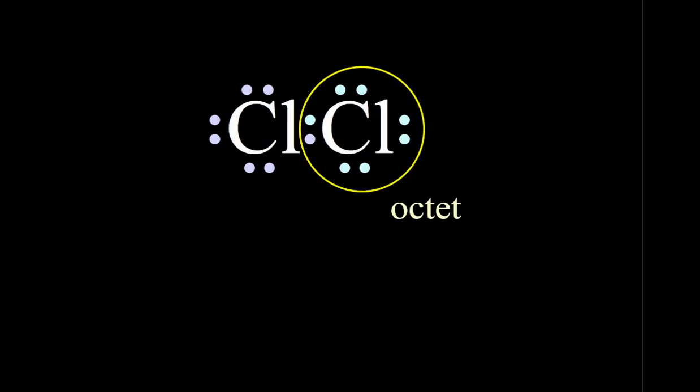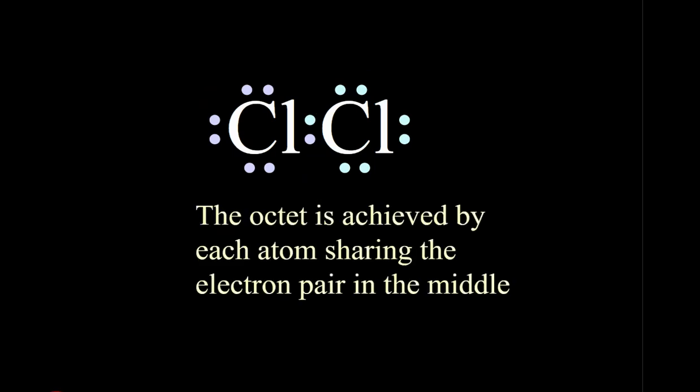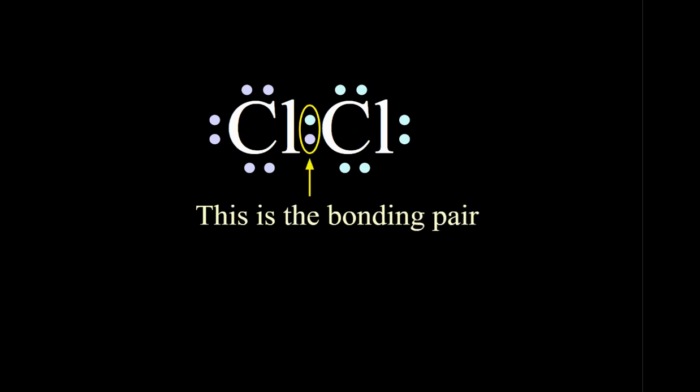So in order to achieve an octet, they will share their lone electron like such. See how this chlorine has an octet now? This chlorine has an octet now. And in the middle, they have a pair that they are sharing. The octet is achieved by each atom sharing the electron pair in the middle. So this is called the bonding pair.